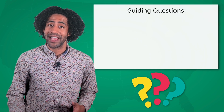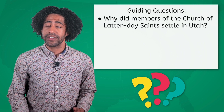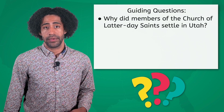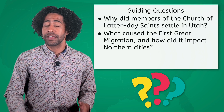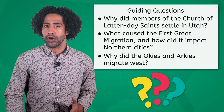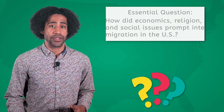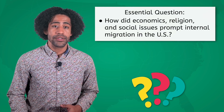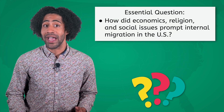We'll answer the following guiding questions as we go: Why did members of the Church of Latter-day Saints settle in Utah? What caused the first Great Migration, and how did it impact northern cities? Why did the Okies and Arkies migrate west? We'll also address the essential question: How did economics, religion, and social issues prompt internal migration in the U.S.?